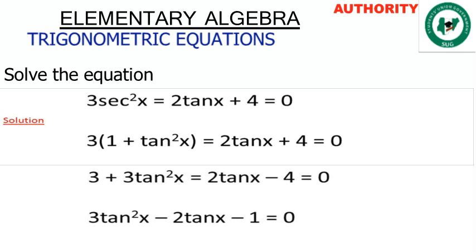Rearranging, 3 minus 4 gives minus 1. So we have 3tan²x minus 2tanx minus 1 equals 0.